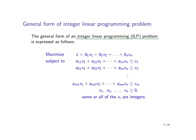We refer to the integer linear programming problem, or the so-called ILP problem, which can be expressed in the following general form. The objective function is linear and all the constraints are linear. All the decision variables x1 up to xn are non-negative, and besides, some or all of them take only integer values.